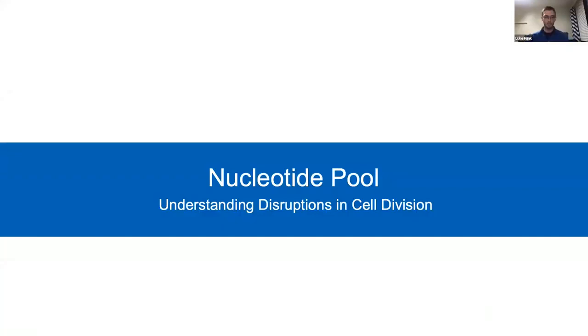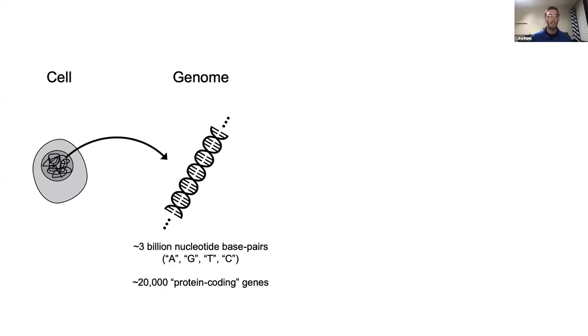One of the primary goals of biology is to understand how cells function and how their functions are regulated. One window into this is looking at the cell's genome. The genome is contained in each cell inside the nucleus, and for humans, the genome contains about 3 billion base pairs of DNA.